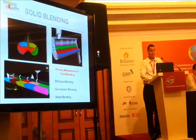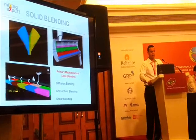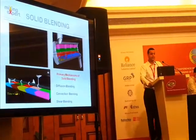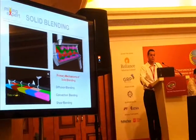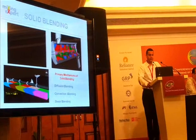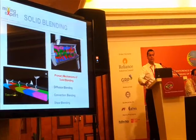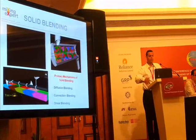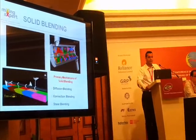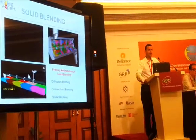What you see here is a V-blender in operation and it works on the principle of diffusion blending. Diffusion blending is characterized by a small scale random movement of the material, caused by the action of the blender. So over a period of time, the mixing would be fairly homogeneous and in the absence of segregation you could get excellent homogeneity to the tune of 98 to 99%.